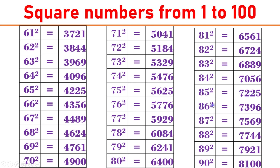86 square equals 7396. 87 square equals 7569. 88 square equals 7744. 89 square equals 7921. 90 square equals 8100.